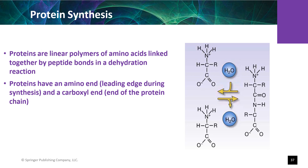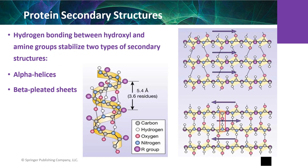Peptide bond formation creates the primary structure, which is the amino acid sequence of a protein. An alpha helix is a peptide coiled to form a single right-handed helix where hydrogen bonds are parallel to the helix main axis; the carbonyl groups point in one direction and the amino groups point in the opposite. A beta sheet is formed by hydrogen bonds between different amino acid sequences lying parallel to each other to form a sheet, either parallel or anti-parallel.